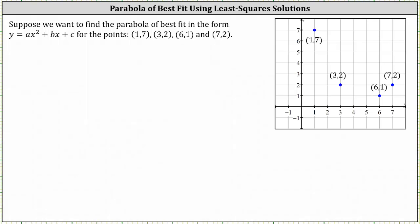Welcome to a lesson on how to determine the parabola of best fit using the least squares solutions. Suppose we want to find the parabola of best fit in the form y equals ax squared plus bx plus c for the points (1, 7), (3, 2), (6, 1), and (7, 2), which I've already graphed on the coordinate plane on the right.